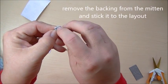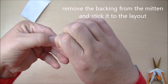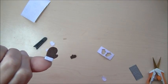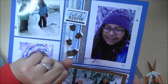And then when we want to stick this on our page, we just peel this piece off, the back side, and our mitten is all sticky and ready to go. Isn't that cute? So then you can add it wherever you'd like on the page.